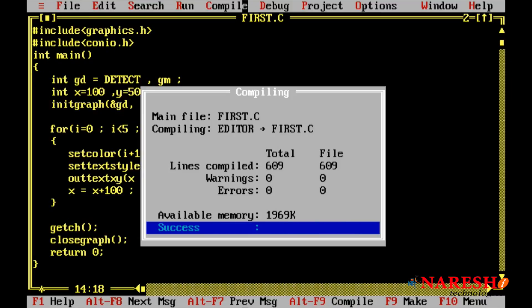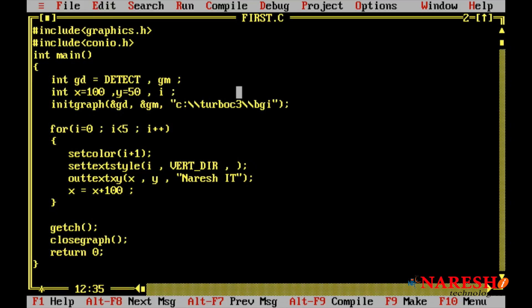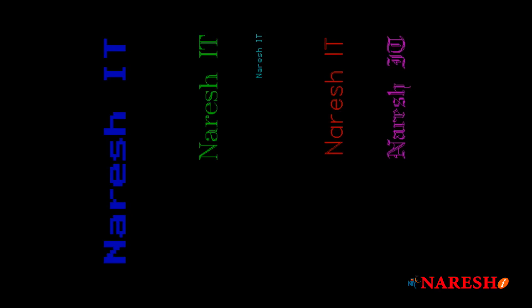In five different locations, in vertical direction, it will print the message. Look at the output — this is how to print different messages in different locations. If you increase the size to 5 and compile and run, you can see the message printed vertically in 5 different locations with 5 different font types and 5 different colors. This is how to print messages vertically.